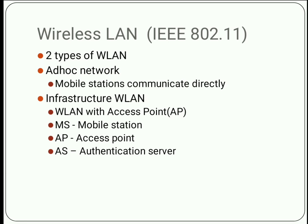You can use two types of wireless LAN: one is ad-hoc network and another one is infrastructure wireless LAN. In the case of ad-hoc wireless LAN, the mobile stations will communicate directly. But in infrastructure wireless LAN, it uses access points. It has got three main parts: MS, AP, and AS, where MS is mobile station, AP is access point, and AS is authentication server.